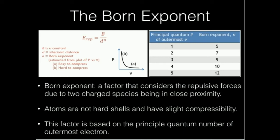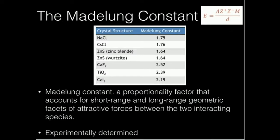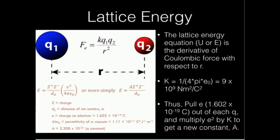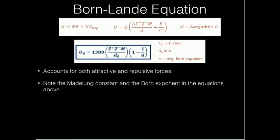In the previous video, we looked at how to calculate the Born exponent, and before that, we looked at how to determine the Madelung constant. The Born exponent is obviously a lot more tedious to determine, but we're going to need both of these for our future equations. We looked at lattice energy — that simple equation turns out to be ideal for ideal circumstances, but in all reality, we have lots of deviations from ideality. So we're going to look at real lattice energy behavior using something called the Born-Landé equation.